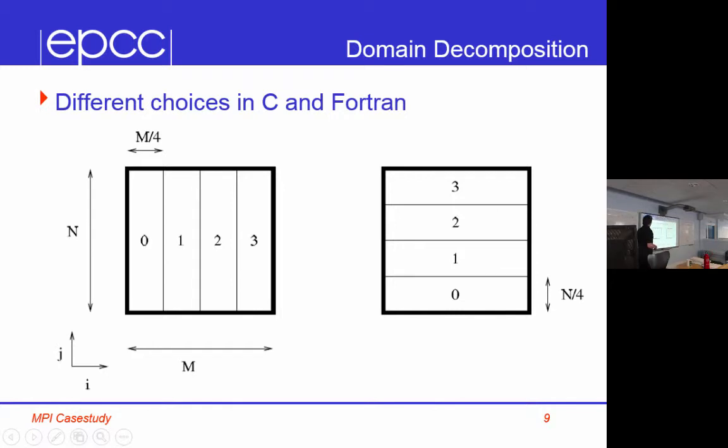But, so you could split it the other way. You could do this in C, but that would mean that your halos would now be non-contiguous in memory, and you'd have to use vectors, and it gets a bit complicated.